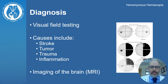Homonymous hemianopia may be diagnosed with formal visual field testing in an eye doctor's office. There are several potential causes which may be further evaluated with imaging of the brain, such as an MRI scan.